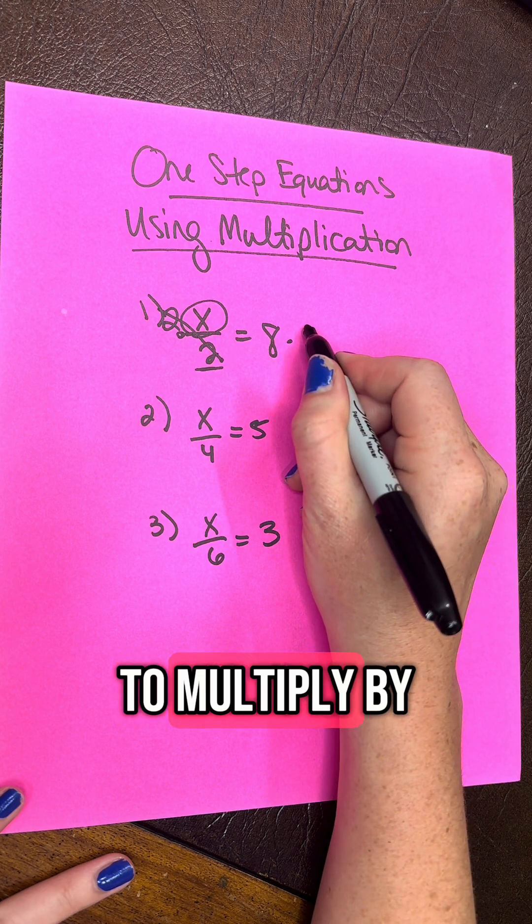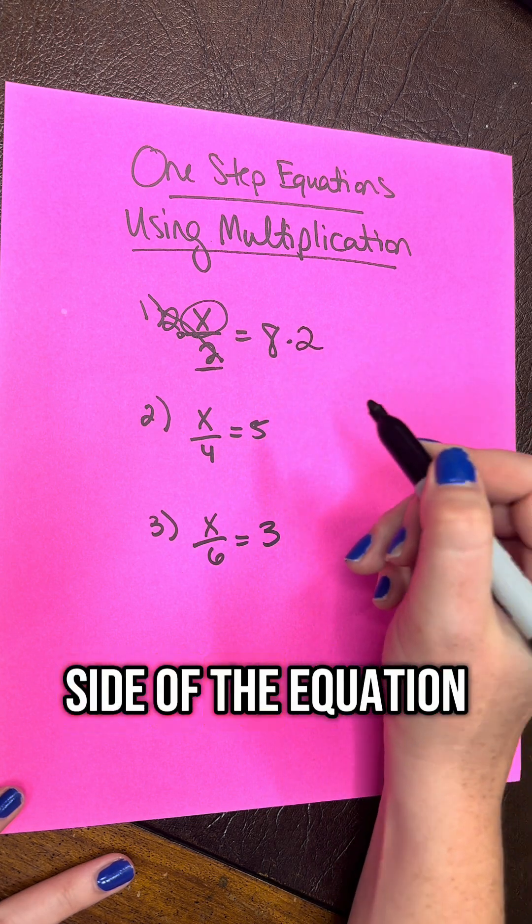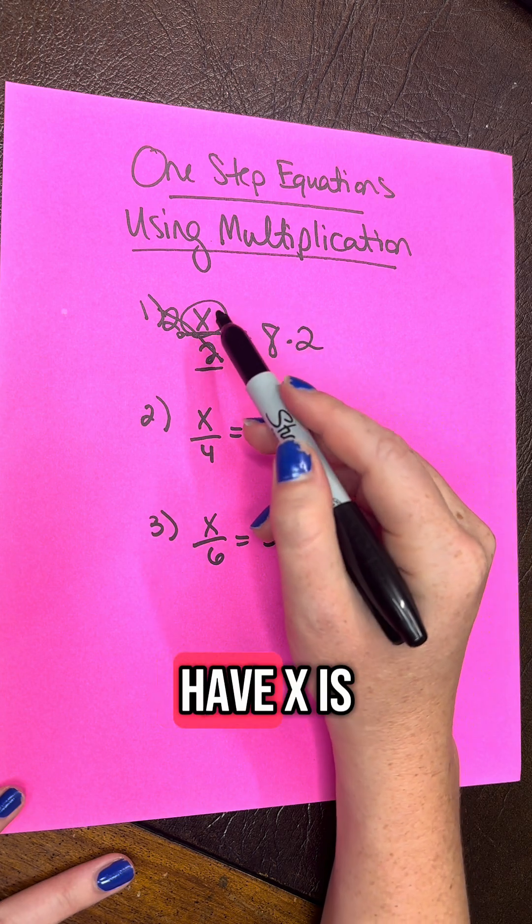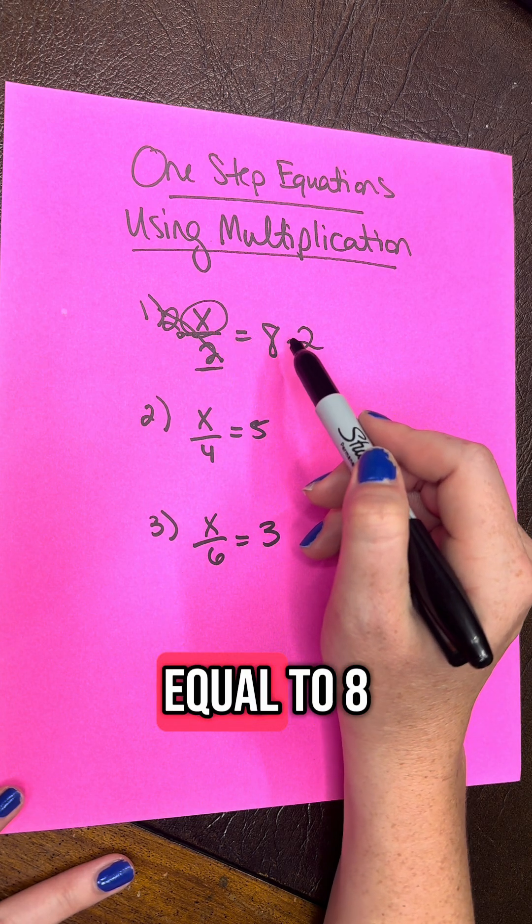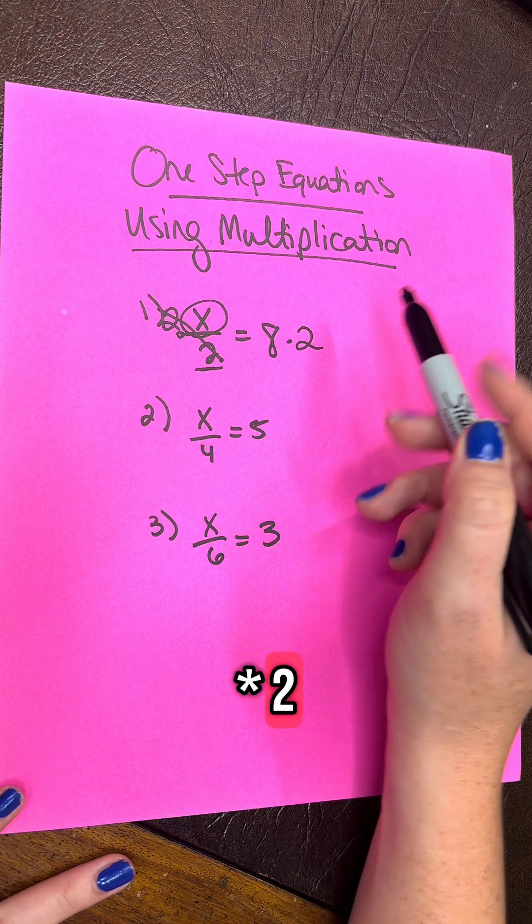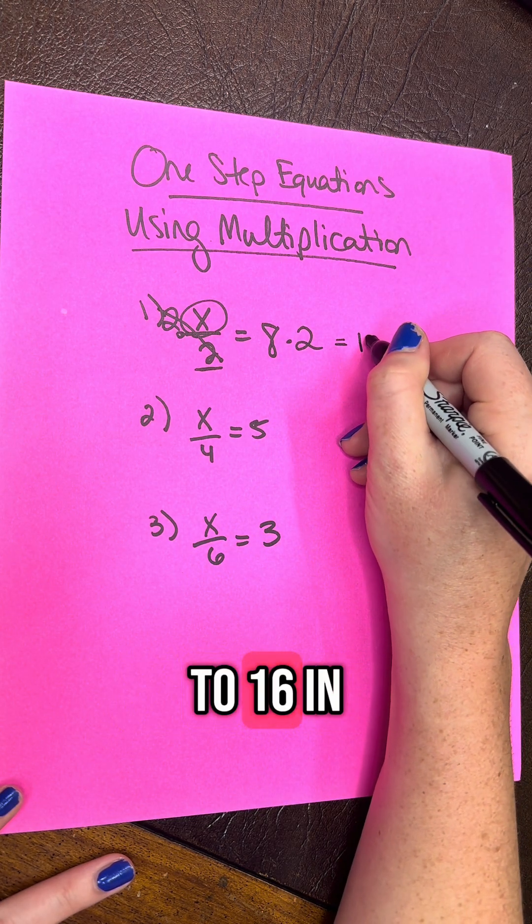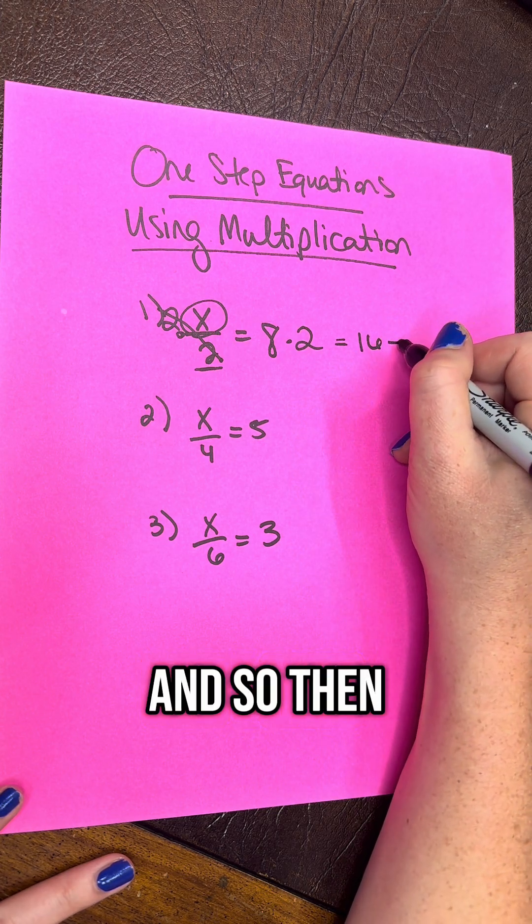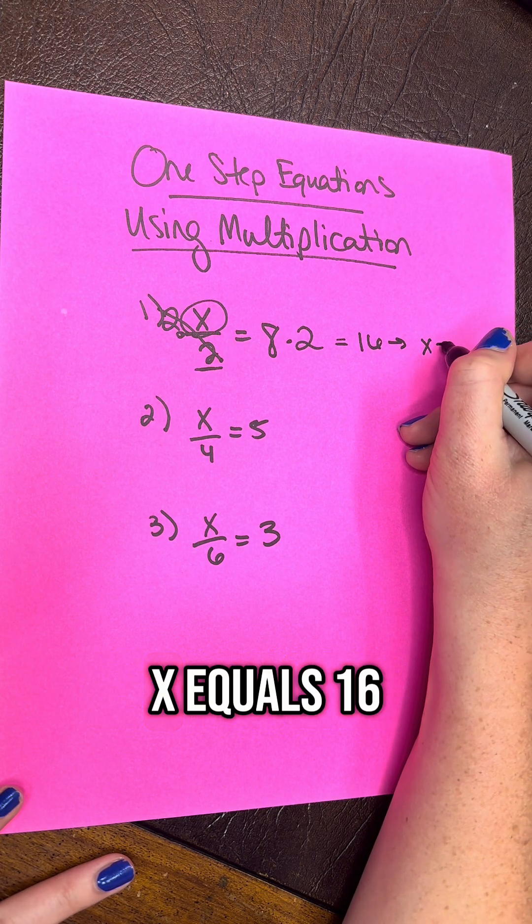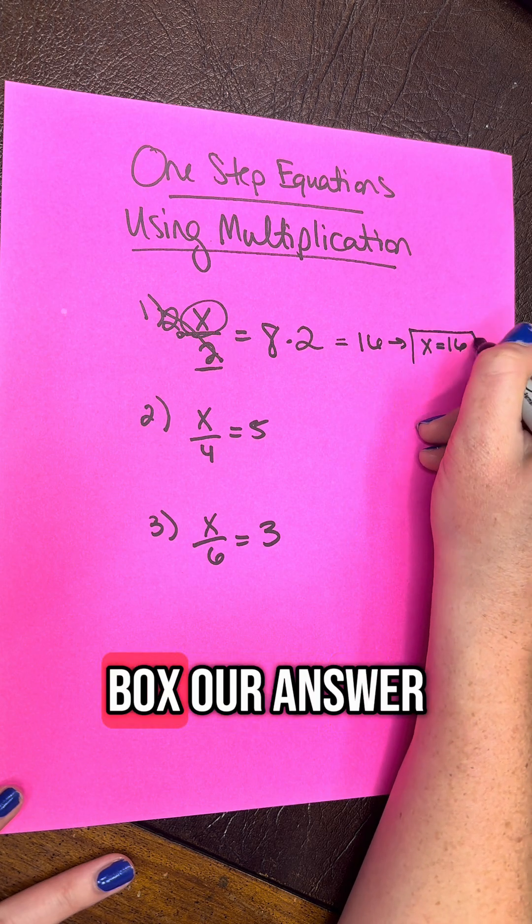we also need to multiply by 2 on this side of the equation. So now we have x is equal to 8 times 2, which is equal to 16. And so then we do a rewrite, x equals 16, box our answer.